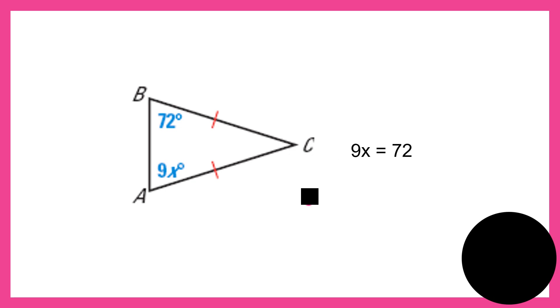In the next example, we have 9x equals 72. Divided by 9, the answer is x equals 8.